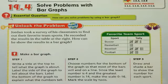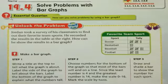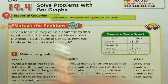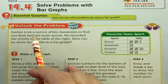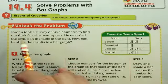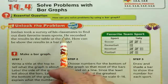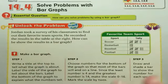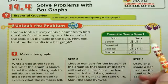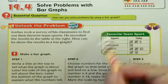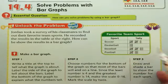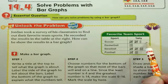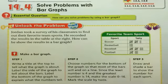That's the question we're going to try and answer throughout this lesson. So let's start with a problem. It says unlock the problem. Jordan took a survey of his classmates to find out their favorite team sports. He recorded the results in the table at the right. How can you show the results in a bar graph? So Jordan created a tally table, and we know that we can turn this into a frequency table if we needed to, or we can take this data and turn it into a bar graph.